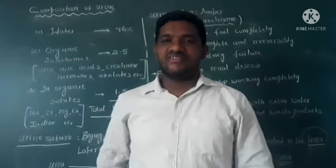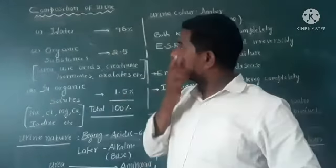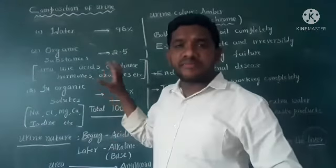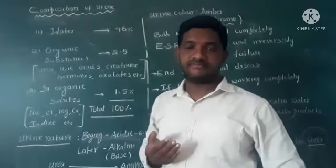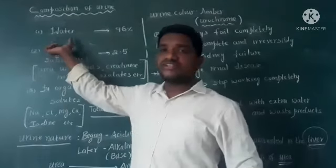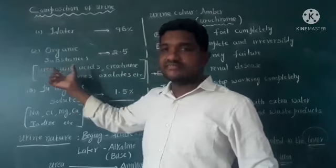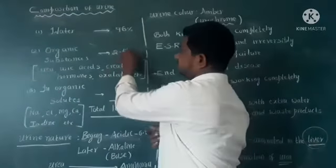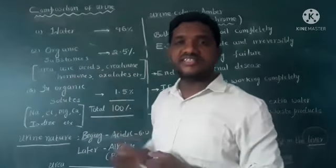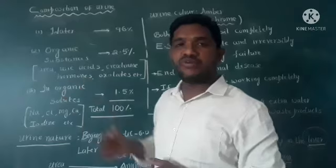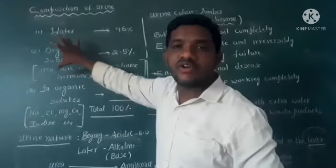Good morning everyone. Today the small sub-concept is composition of urine — what materials are present inside the urine. There are different kinds of materials present. The first one is water, at 96%. The second is organic substances, at 2.5%. Organic substances include urea, uric acid, hormones, and oxalates.